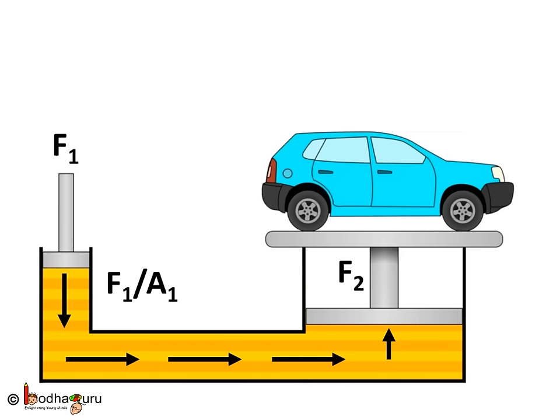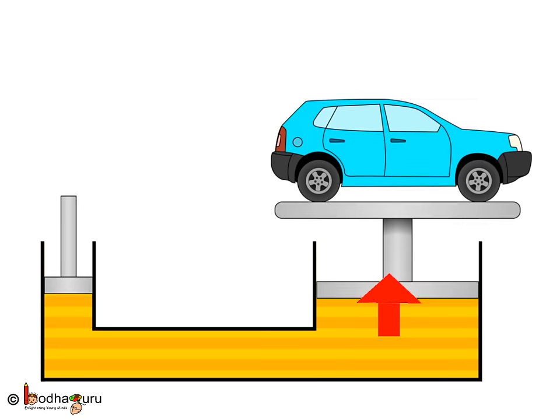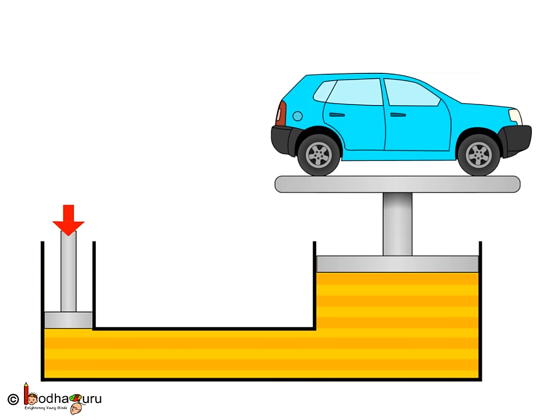Thus, we can generate enough push to lift a heavy car by applying a much smaller downward push in the smaller piston, i.e. in the left arm.